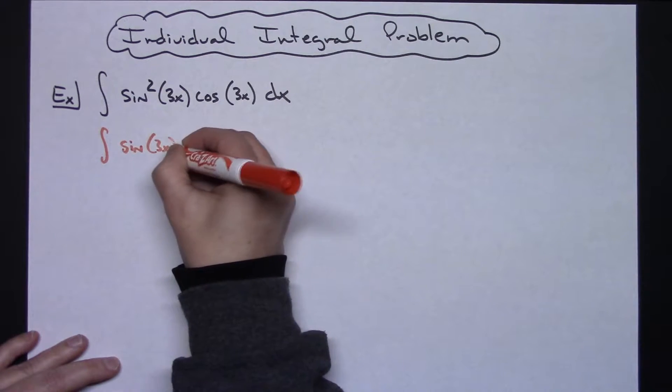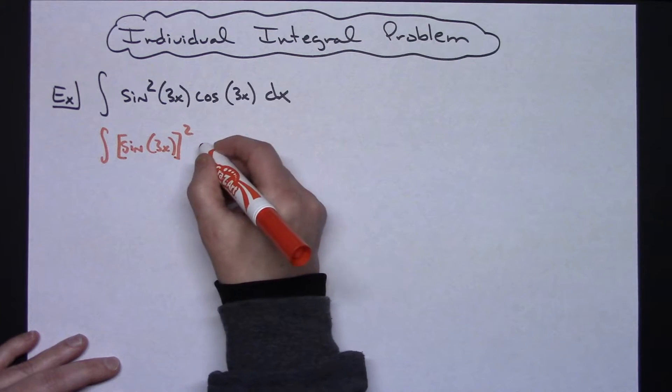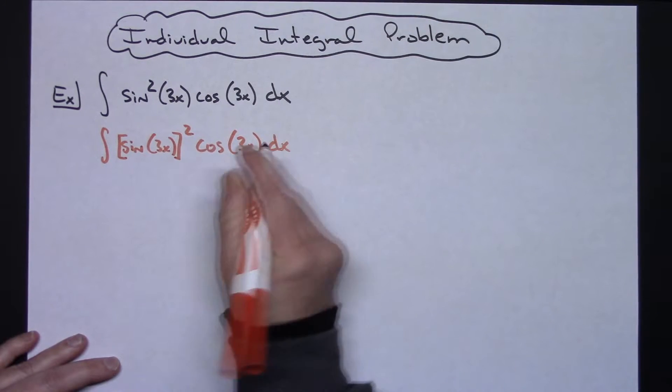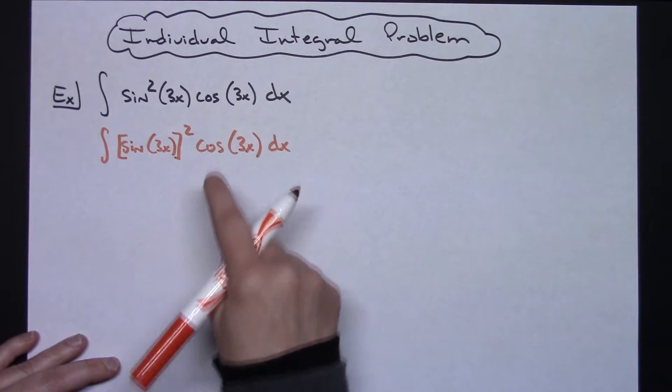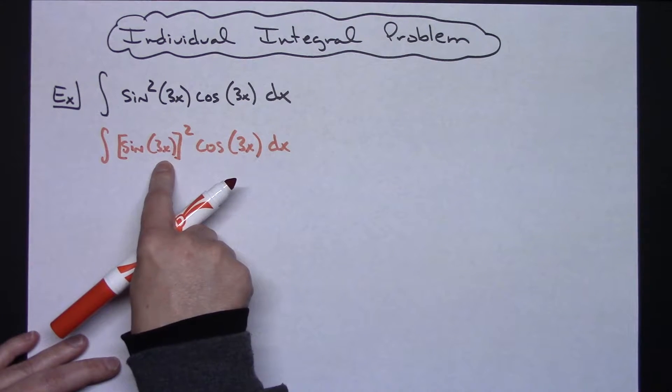So sine of 3x, and then this entire quantity is being squared. You take the time to rewrite that so you can clearly see you've got an outside function of something being squared and an inside function of sine of 3x.